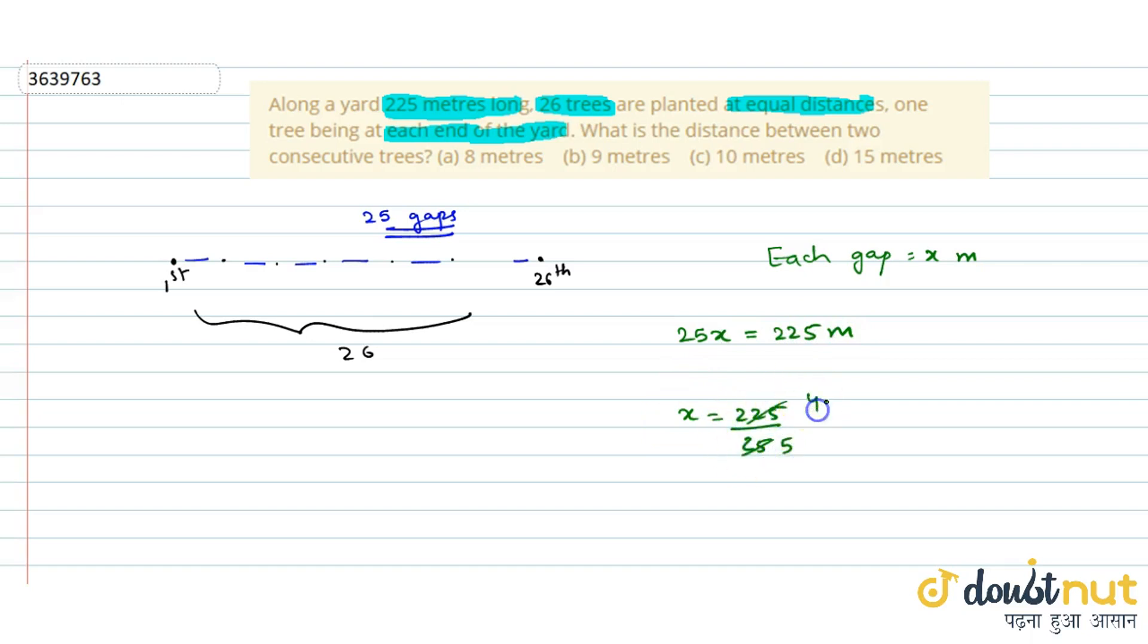225 divided by 25 equals 9. So the distance between two consecutive trees is 9 meters. This is our answer - option B is the correct answer.